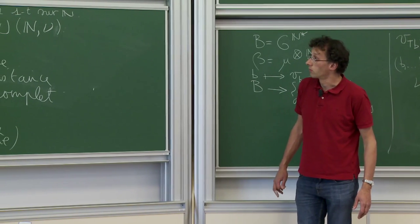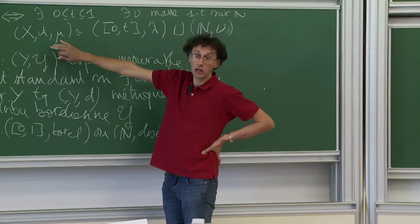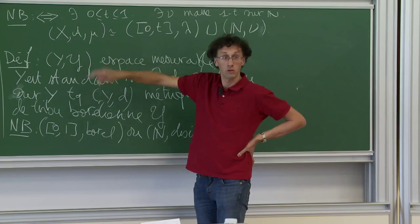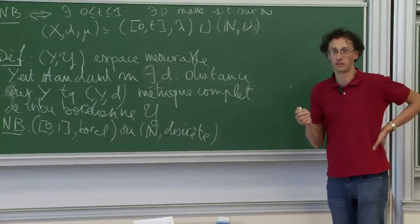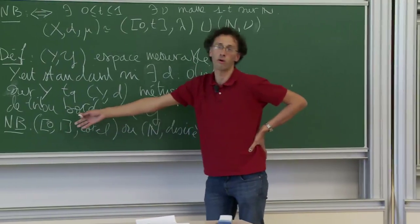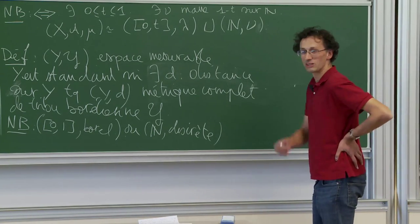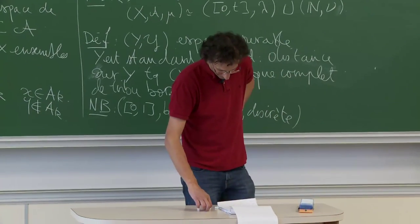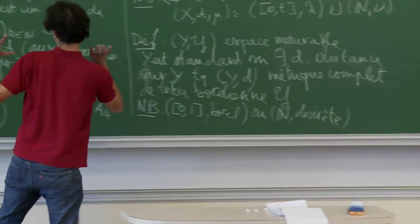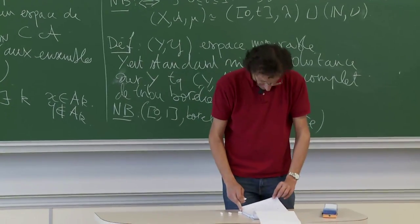L'intérêt de la notion, c'est que si vous prenez un borélien standard et puis un sous-ensemble dans la tribu borélienne, vous restreignez la tribu borélienne à ce sous-ensemble — vous récupérez un borélien standard. Ce n'est pas complètement évident comme théorème. Voilà, ce sont les bons objets quand on fait de la théorie de la mesure : les espaces mesurés qu'il faut prendre, ce sont les espaces de Lebesgue ; les espaces mesurables qu'il faut prendre, ce sont les boréliens standards.